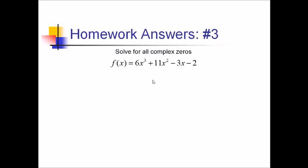For number 3, we're trying to find the complex zeros for this polynomial function. Let's start by getting our possible rational roots. That will be factors of the constant, 2, over the lead coefficient, 6. So, factors of 2, we've got 1 and 2. Factors of 6, we've got 1, 2, 3, and 6.